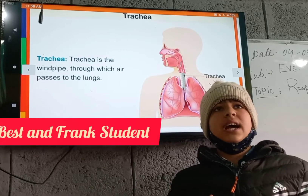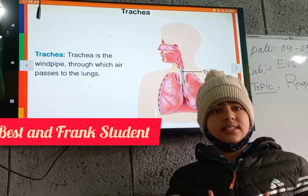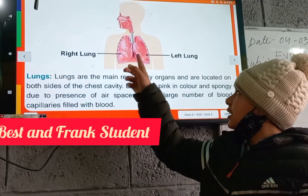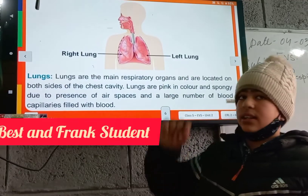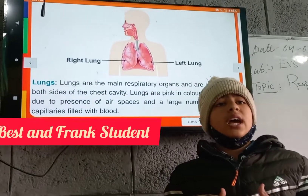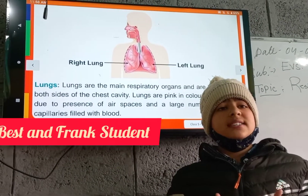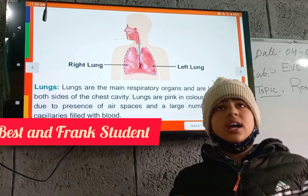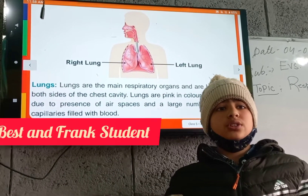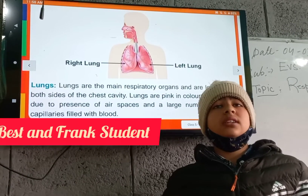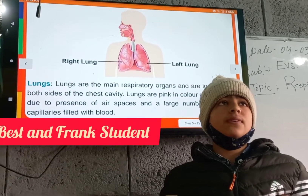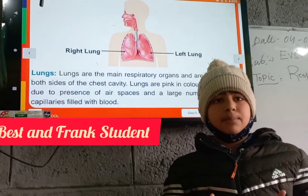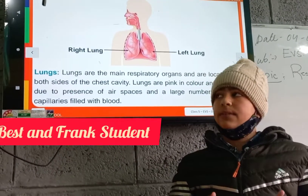Lungs. We have two lungs inside our body: a right lung and a left lung. Our lungs are pink in color. Our lungs are spongy like a balloon due to the presence of large spaces of air and a large amount of blood capillaries filled with blood.